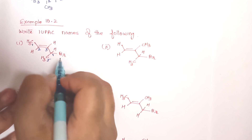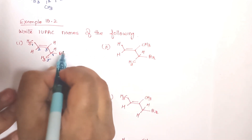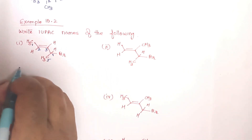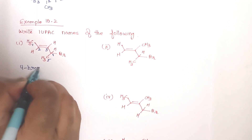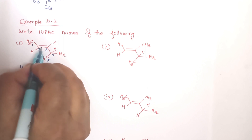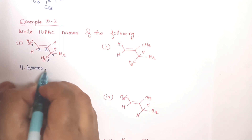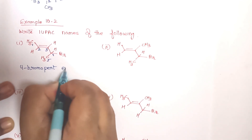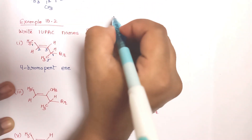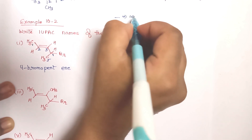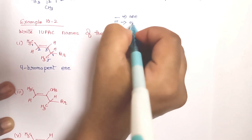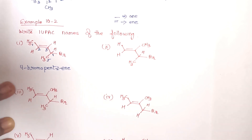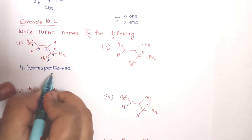While writing the name, first write the halogen group. The halogen is attached to the fourth carbon atom, so 4-bromo. There are 5 carbon atoms so 'pent'. It is a double bond compound so we write 'en' instead of 'ane'. The double bond starts at position 2, so pent-2-ene. The full name of the compound is 4-bromopent-2-ene.